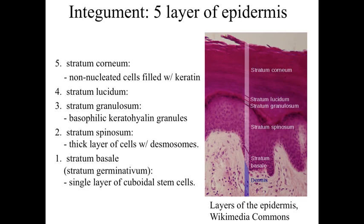Above that is the stratum granulosum. Within this layer we have granular cells with many granules — basophilic keratohyaline granules, which we'll discuss in more detail in the next lecture. It has a really granular, really basophilic appearance. Above that is the stratum lucidum, essentially a translucent layer which is often difficult to see or locate in many specimens — recognize that it's there, but it may not be visible.